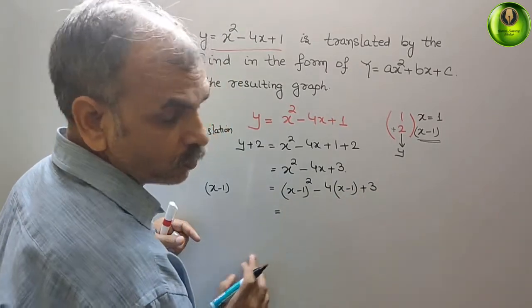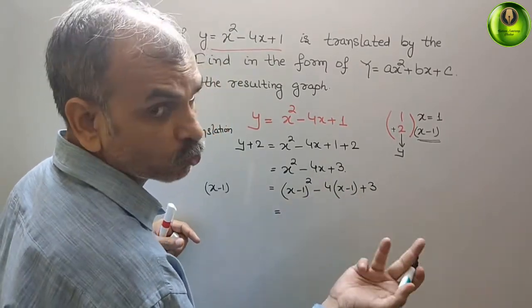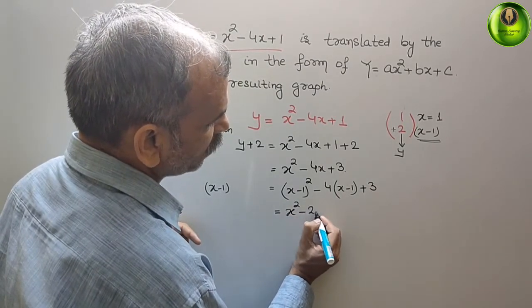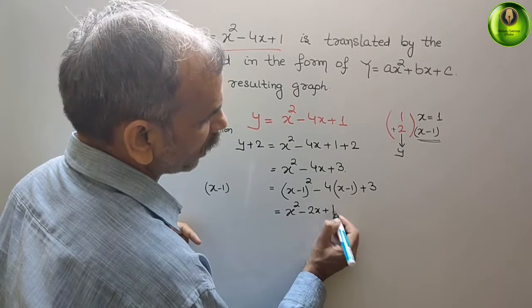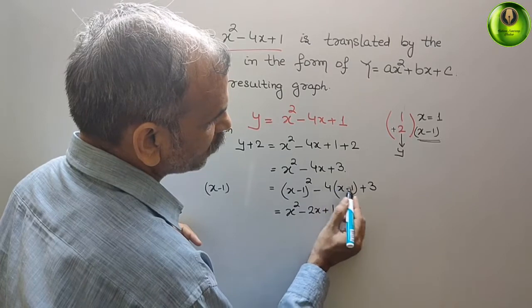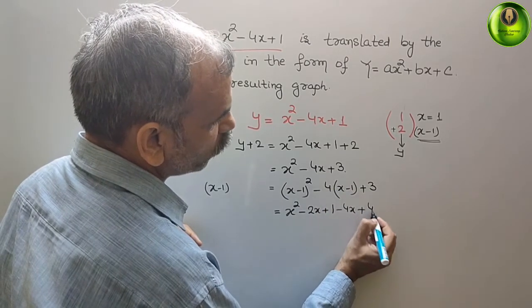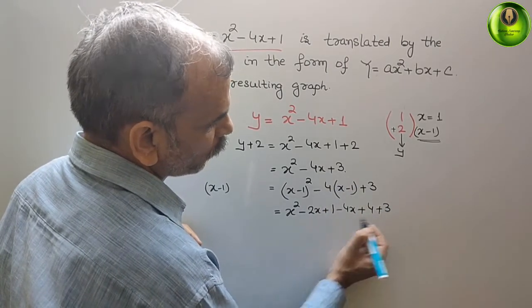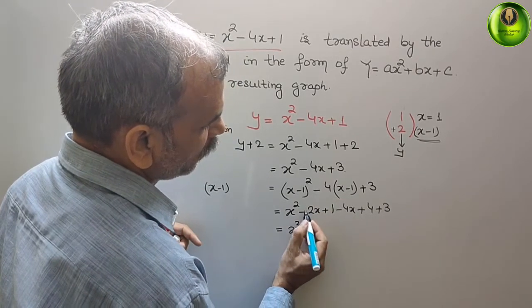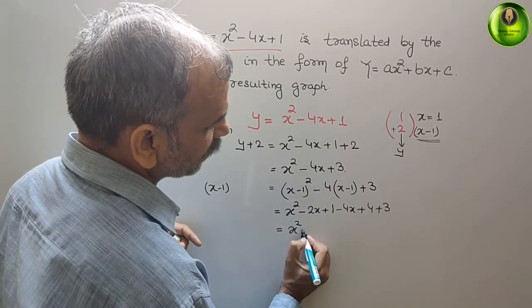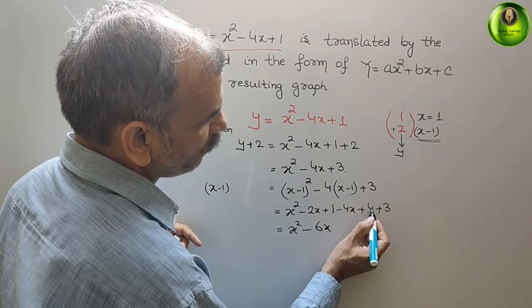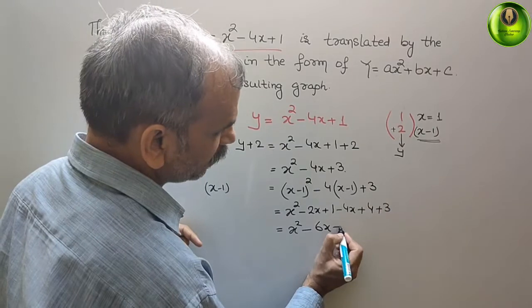That is equal to, now, x minus 1 whole square is what? x square minus 2x plus 1 minus 4x minus 4x, minus into minus is plus 4 plus 3. That will give you x square minus 2x minus 2x minus 2x minus 4x is minus 6x. 1 plus 4 is 5. 5 plus 3 is plus 8.